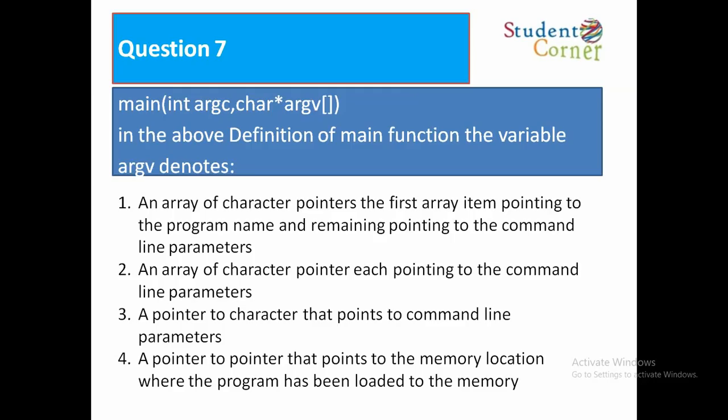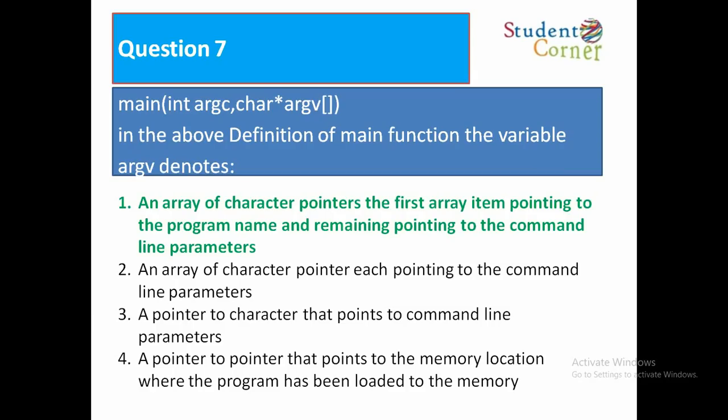Option 2: An array of character pointers, each pointing to command line parameters. Option 3: A pointer to character that points to command line parameters. Option 4: A parameter to a pointer that points to where the program is loaded in memory. The correct answer is option 1: an array of character pointers, with the first item pointing to the program name and remaining pointing to command line parameters.